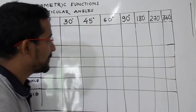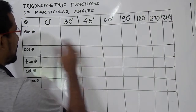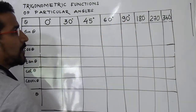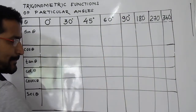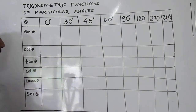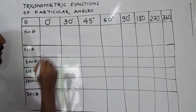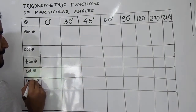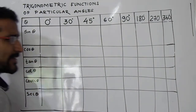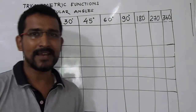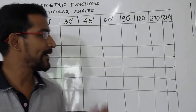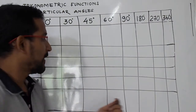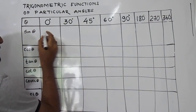We will first see the sine function and cosine function up to 90 degrees. So what will be the values? How can you remember these values very easily? If you know the sine function values, you can write all other values very easily and remember them all.